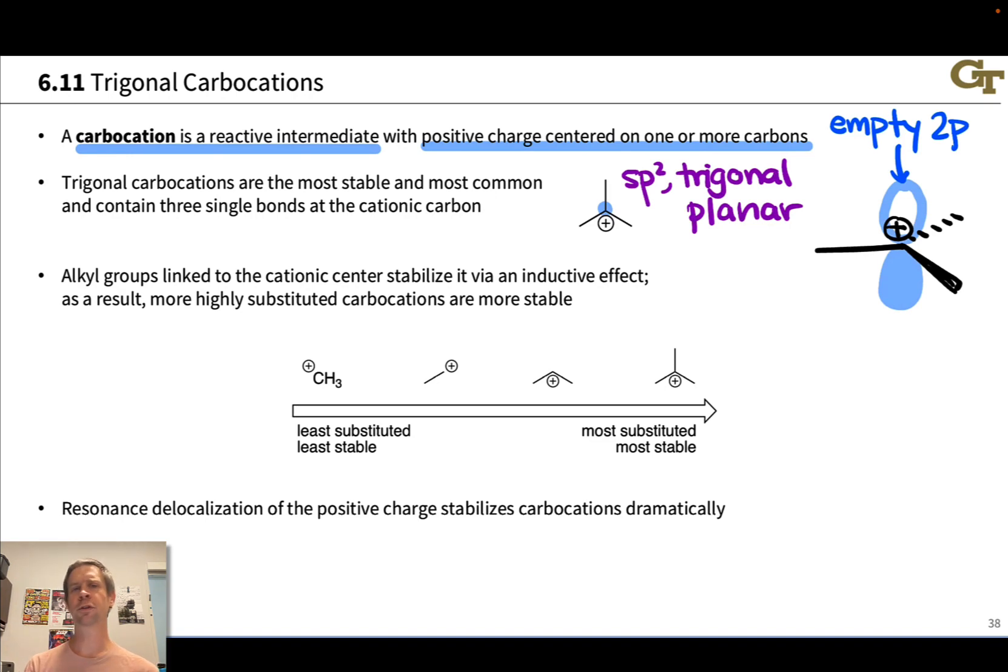When it comes to the stabilities of carbocations, we're interested in structural features that make carbocations more or less stable. One of the most common and more important has to do with the number of carbon groups connected to the cationic center versus hydrogens. CH3 cation is actually among the least stable carbocations. As we replace those Hs in the CH3 or methyl cation with carbon groups, for example, here we have 1 CH3, here we have 2, and here we have 3, the stability of the cationic center goes up.